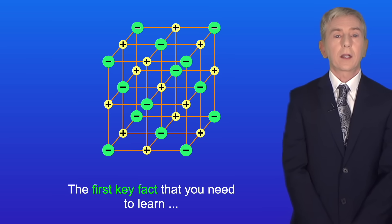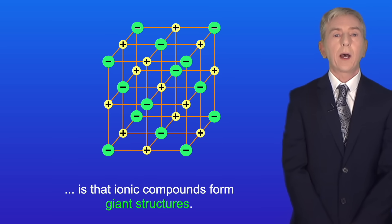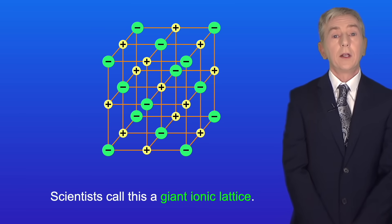The first key fact that you need to learn is that ionic compounds form giant structures, and scientists call this a giant ionic lattice.